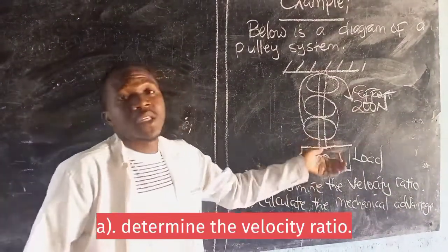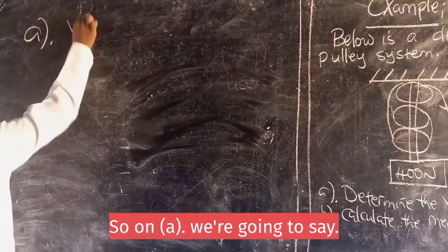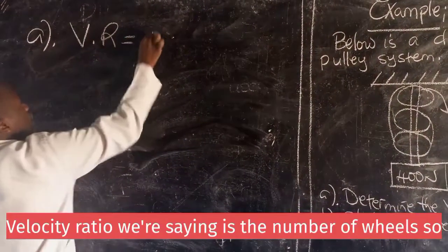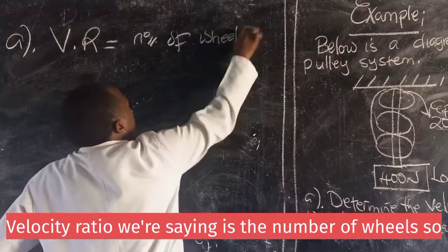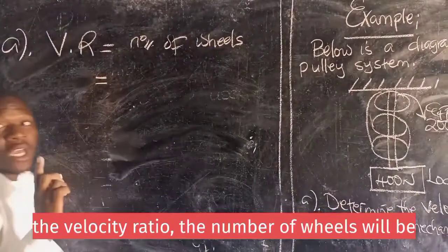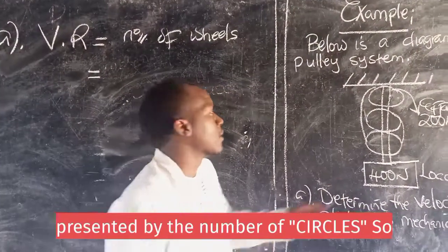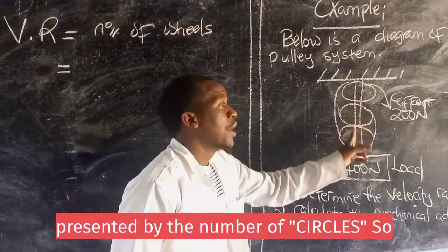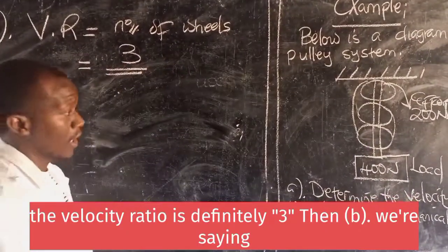A, determine the velocity ratio. So, on A, we are going to say velocity ratio is the number of wheels. The number of wheels could be represented by the number of circles. So, one, two, three. So, velocity ratio is definitely three.